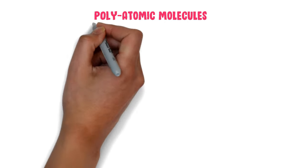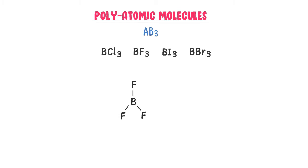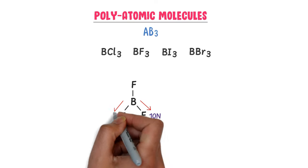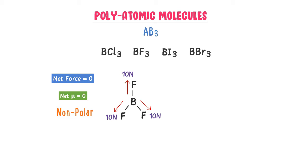Now let me teach you polyatomic molecules of AB₃ type, like BCl₃, BF₃, BI₃, etc. These molecules all have the same trigonal planar geometry. Each fluorine atom, being more electronegative, exerts a 10N force — one in each of the three directions. Here, the net force is 0. Hence, the net dipole moment is also 0, and we say this is a non-polar molecule. Similarly, all such AB₃ molecules are non-polar.